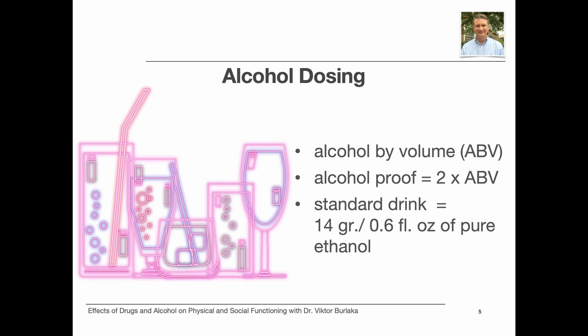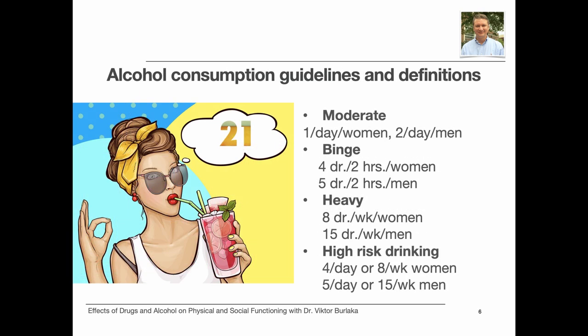The standard drink measure is a way of indicating alcohol consumption. Each standard drink equivalent is determined as 14 grams of pure ethanol in a beverage. Alcohol should only be consumed in moderation and only by individuals who have attained the minimum legal drinking age, which is 21 years across the US. Moderate drinking means up to one standard drink equivalent per day for women and up to two drinks per day for men.